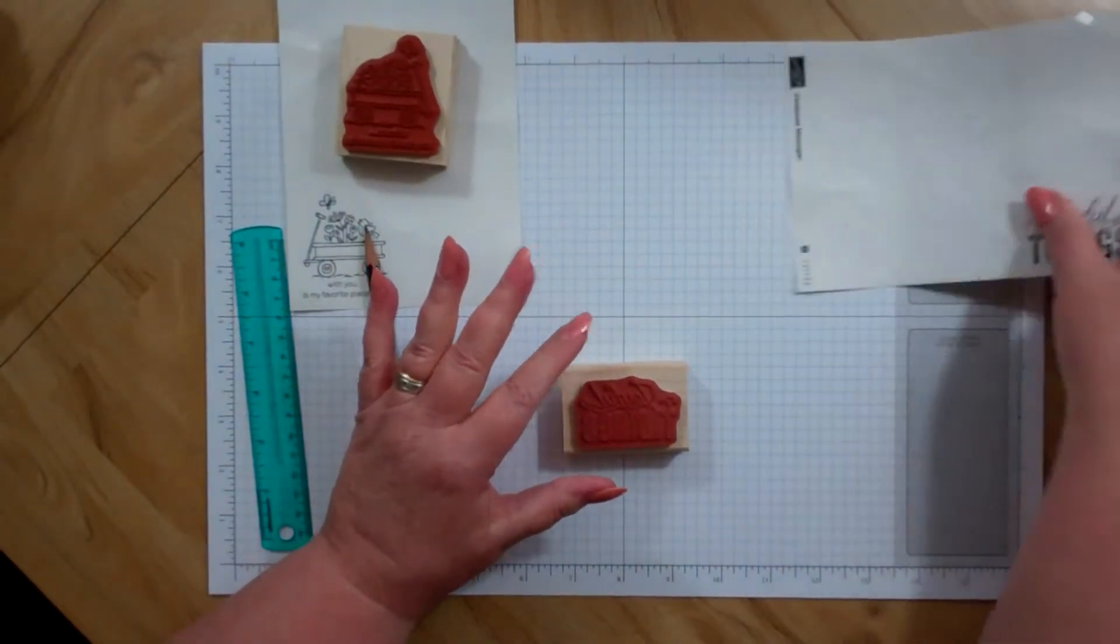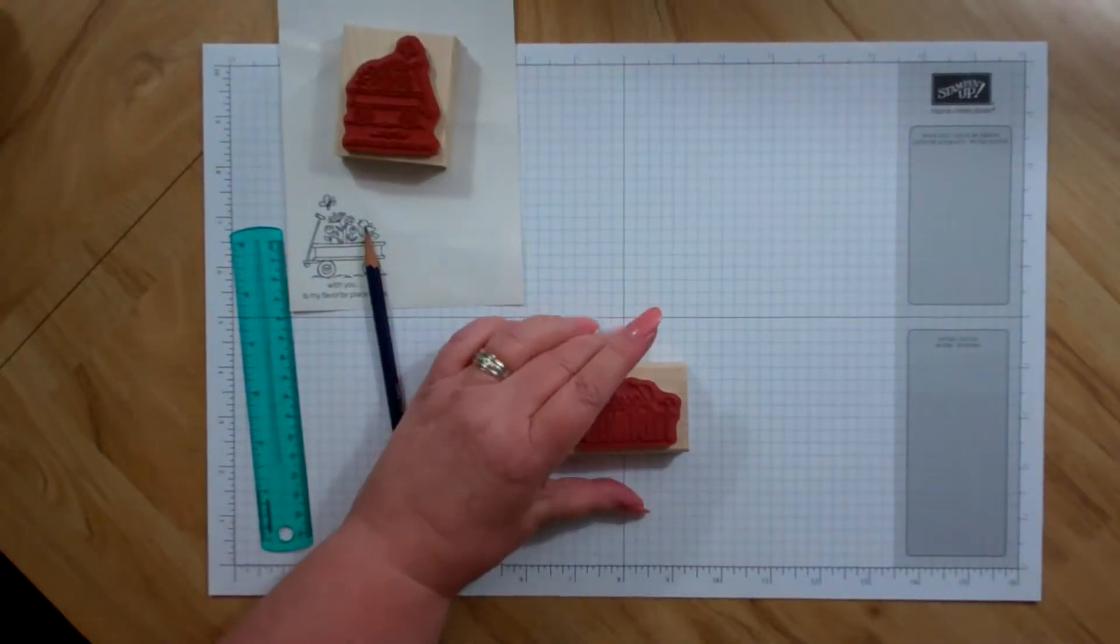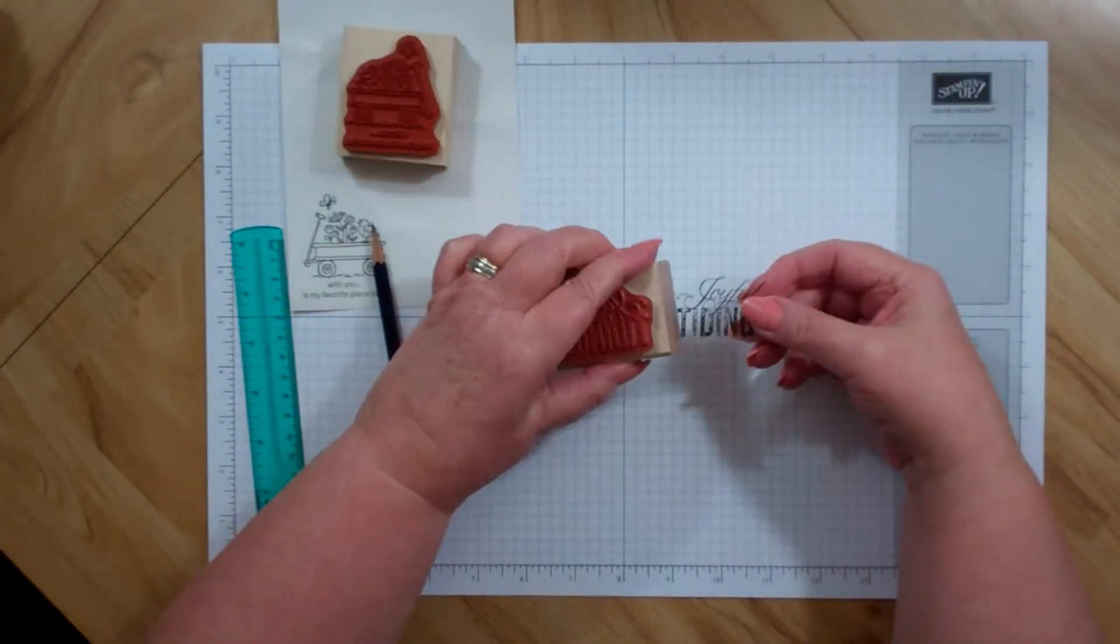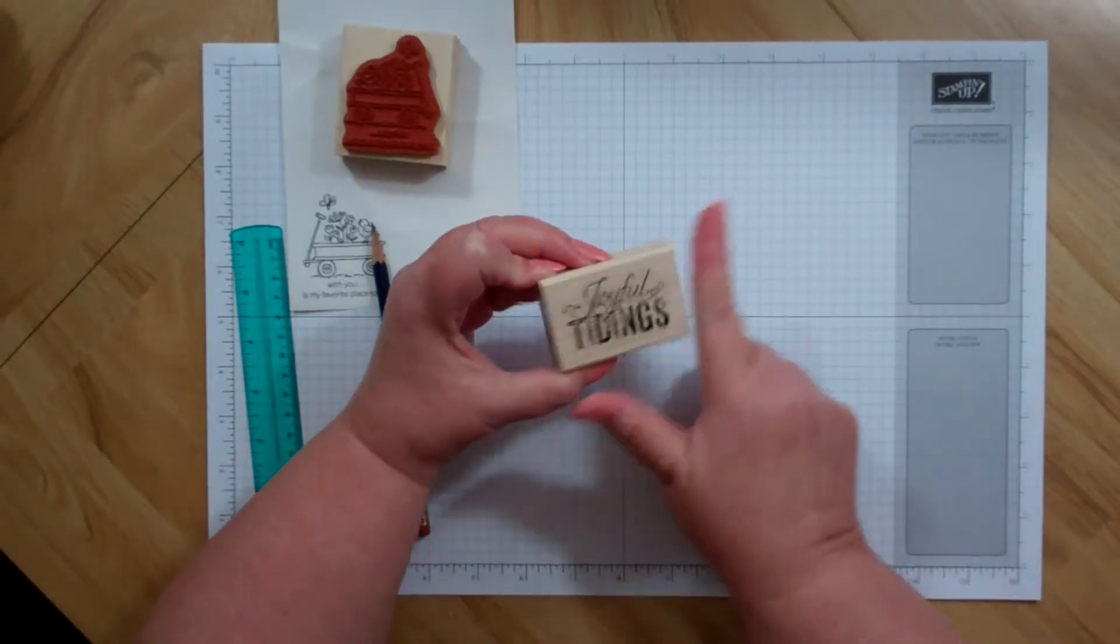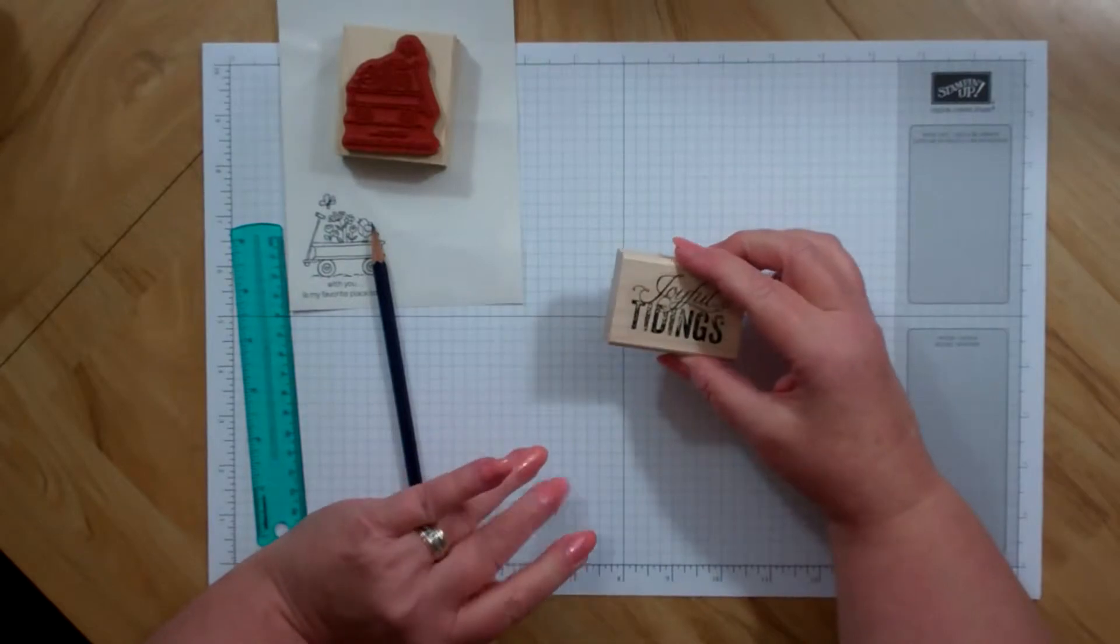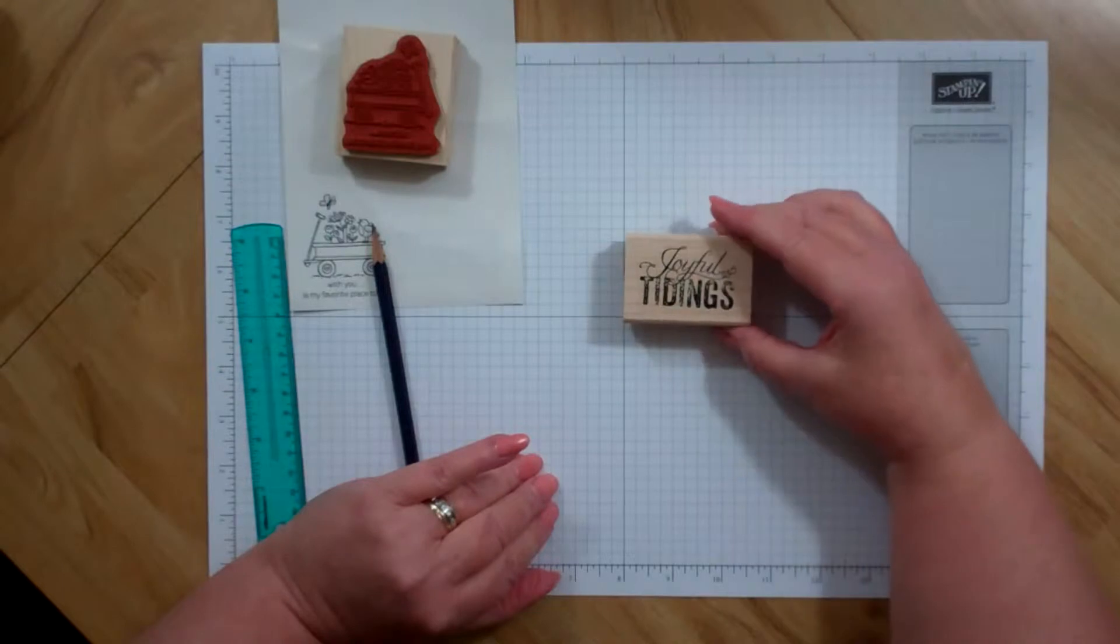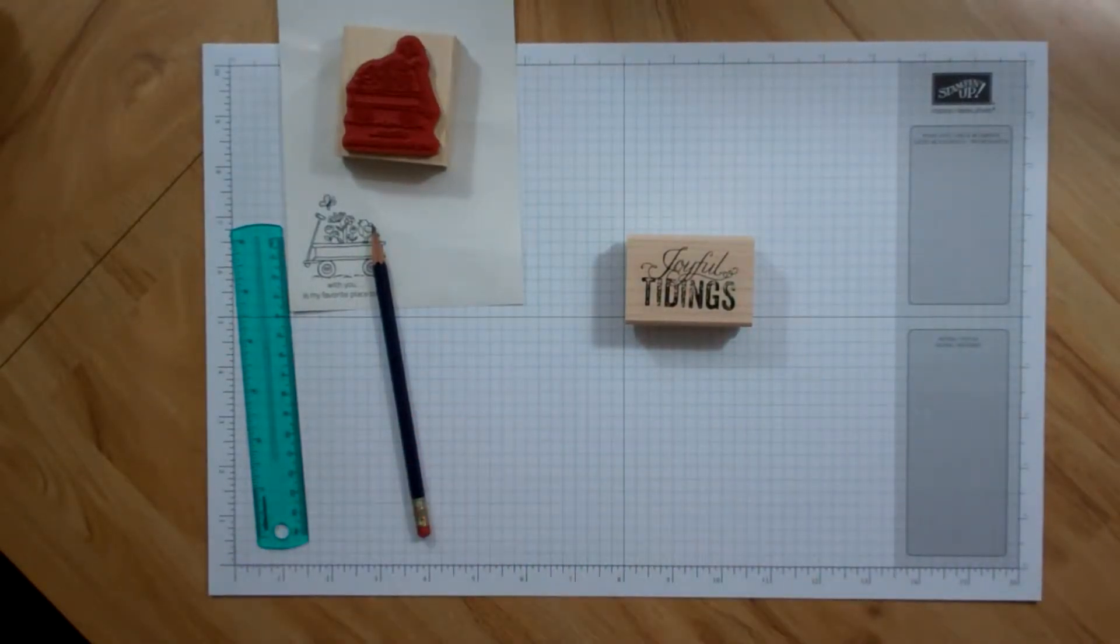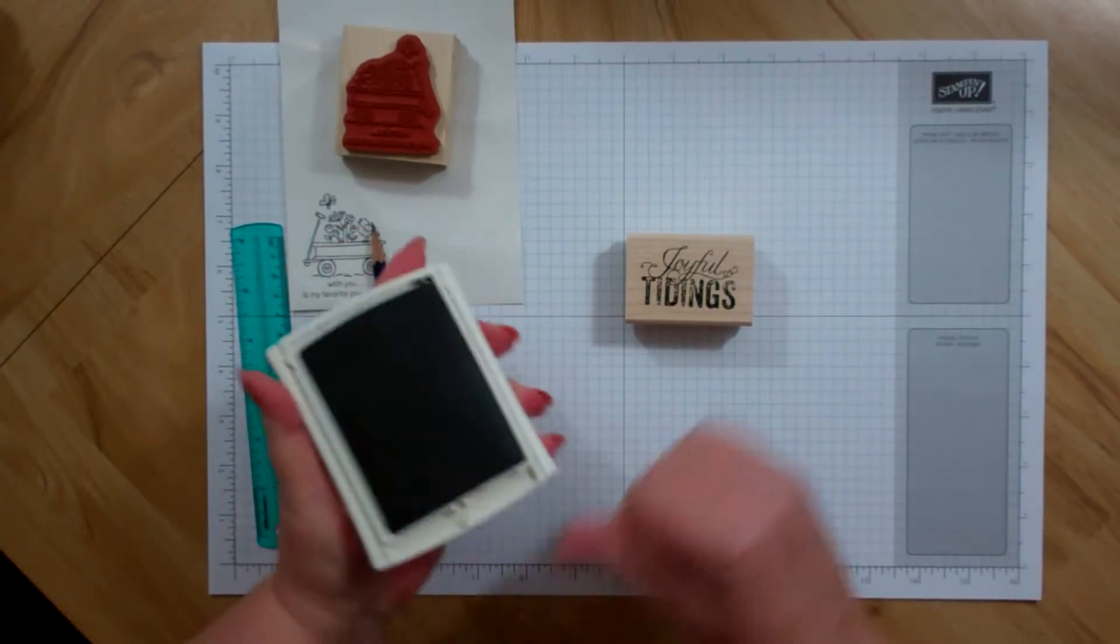There, that's all nice and tight. And then I like to put the sticker on. But the main thing is, what you're going to realize is that all you have to do is line up your stamp along the edge of your project, and your words will come out nice and straight. Alright, I'll give you an example.